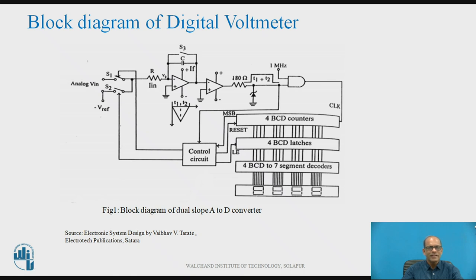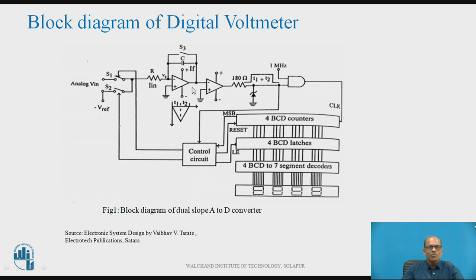The output of the integrator is a negative-going ramp. When the output is a negative-going ramp, the output of the comparator is high — because the voltage at the positive terminal is 0 and the voltage at the negative terminal is a negative-going ramp — so the output is clipped to 4.7V by the Zener diode and the AND gate is enabled. The 1 MHz square wave is then applied as a clock to the BCD counter, so the counter starts counting.